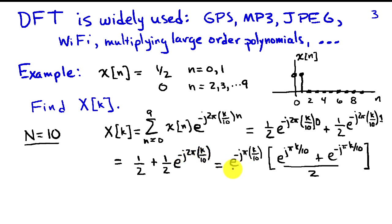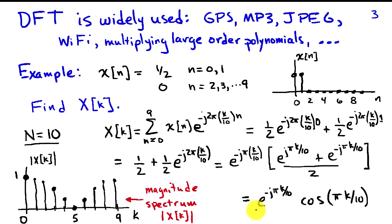We can simplify by factoring out half of this exponential, because the remaining terms will look like a cosine. We write e to the minus j pi k over 10 times the quantity e to the j pi k over 10 plus e to the minus j pi k over 10, which equals e to the minus j pi k over 10 times cosine of pi k over 10. The magnitude spectrum shows that when k equals 0 we have 1, when k equals 5 we have cosine of pi over 2, which is 0, and from 5 to 9 the values increase proportional to a cosine. This example was done by hand to show how the formula is applied, but in practice a computer does the computation.